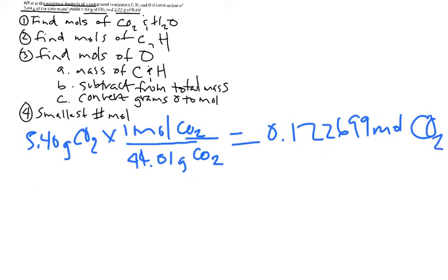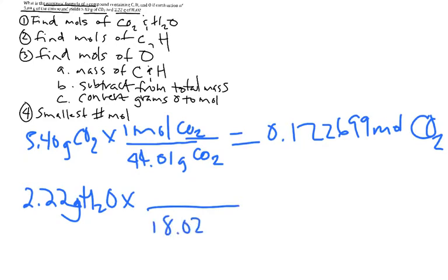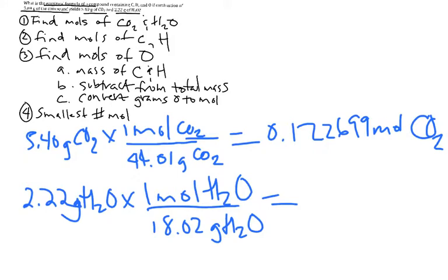Now let's find the moles of water. We have 2.22 grams of water. Water is 18.02 grams per mole. So 2.22 divided by 18.02 gives us 0.123196 moles of water.